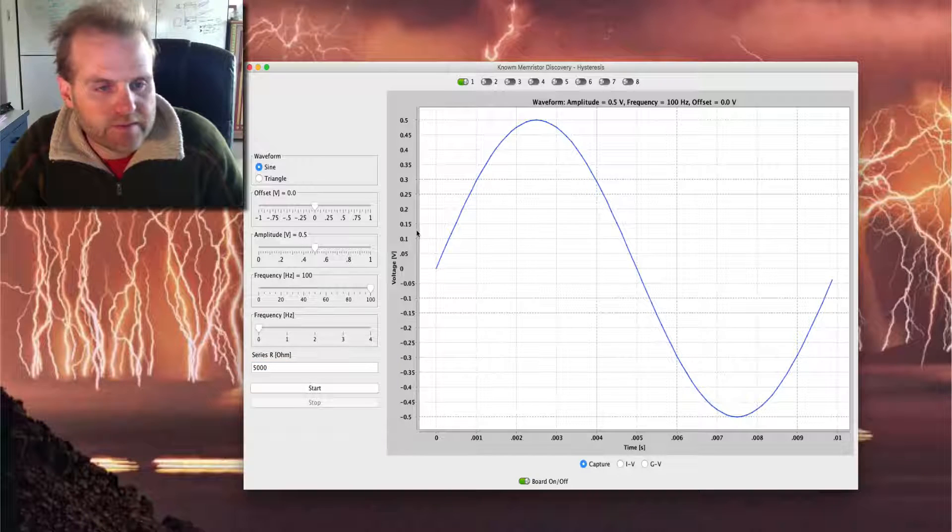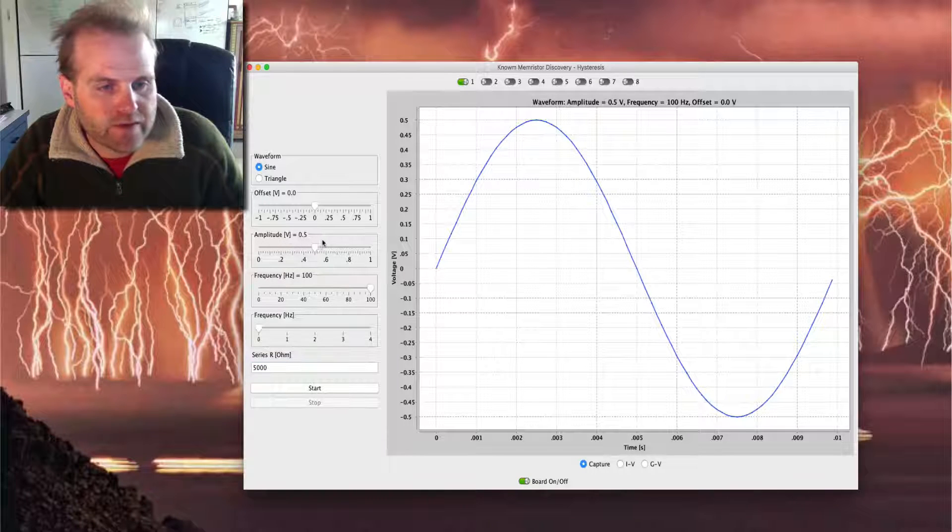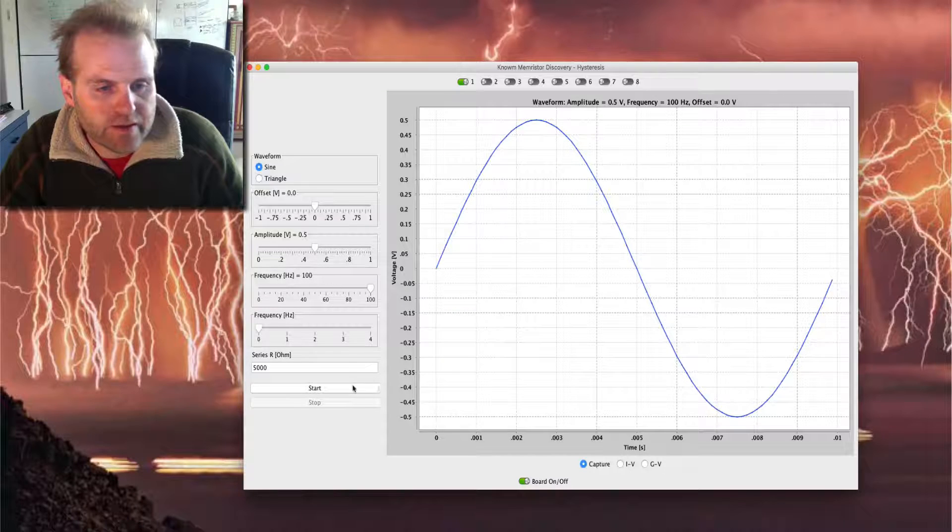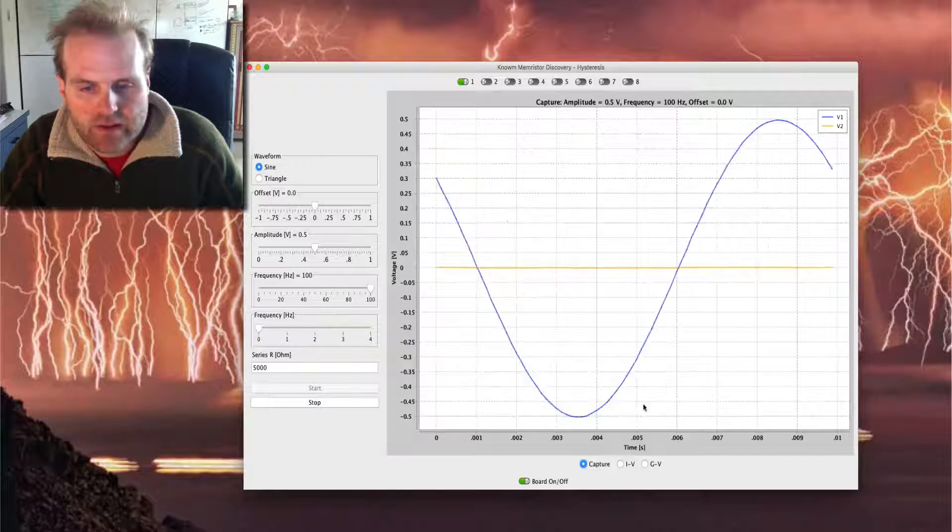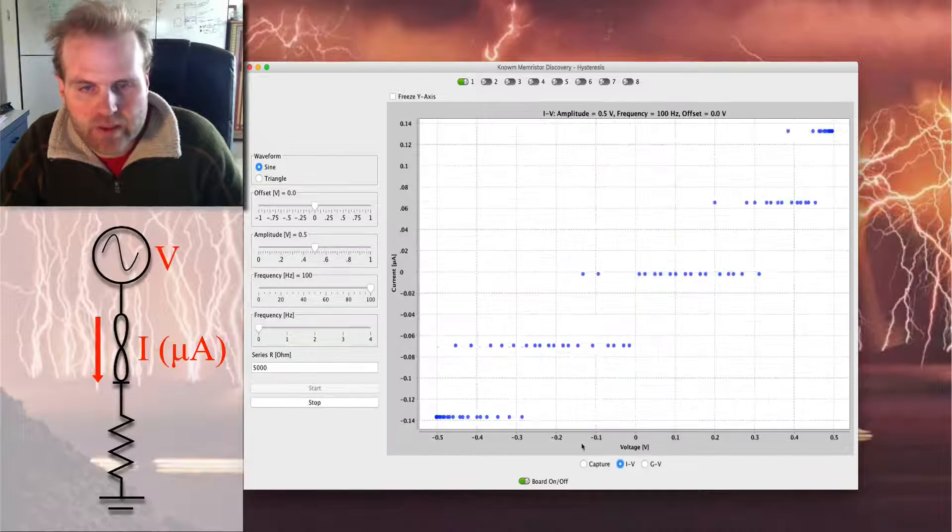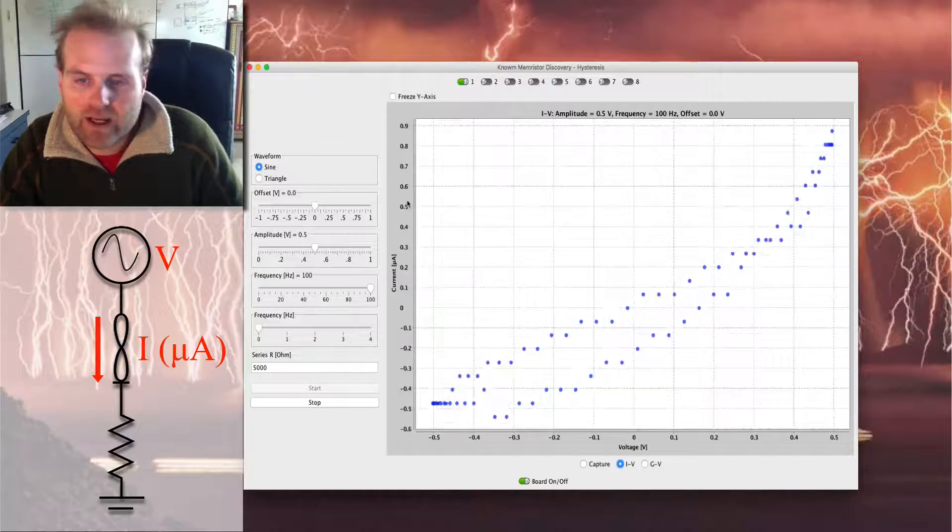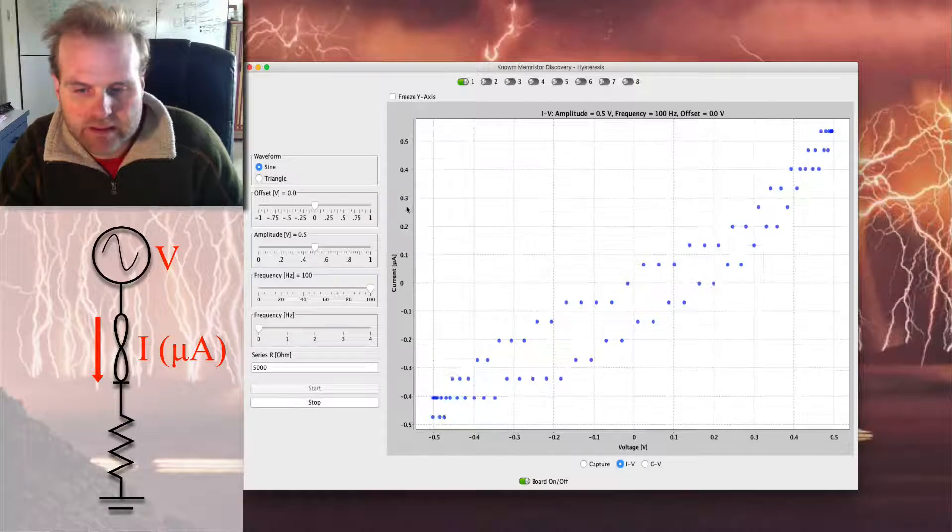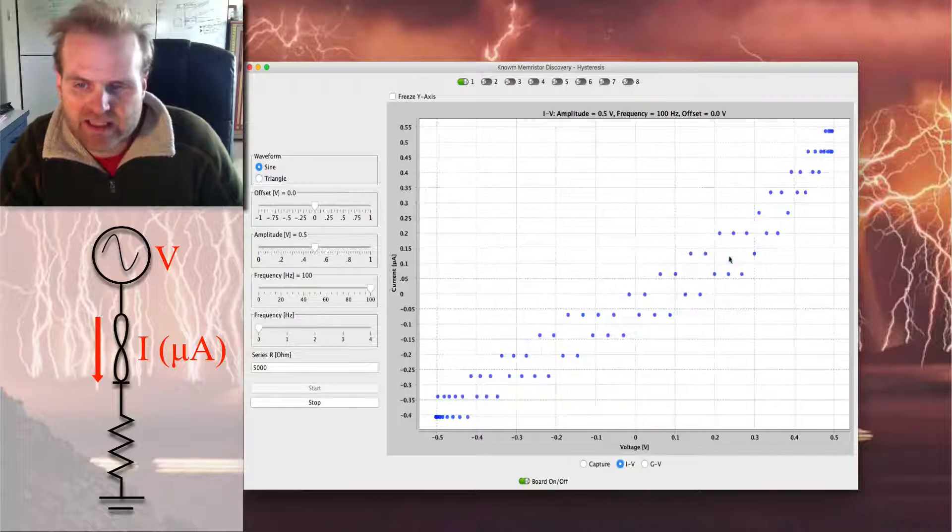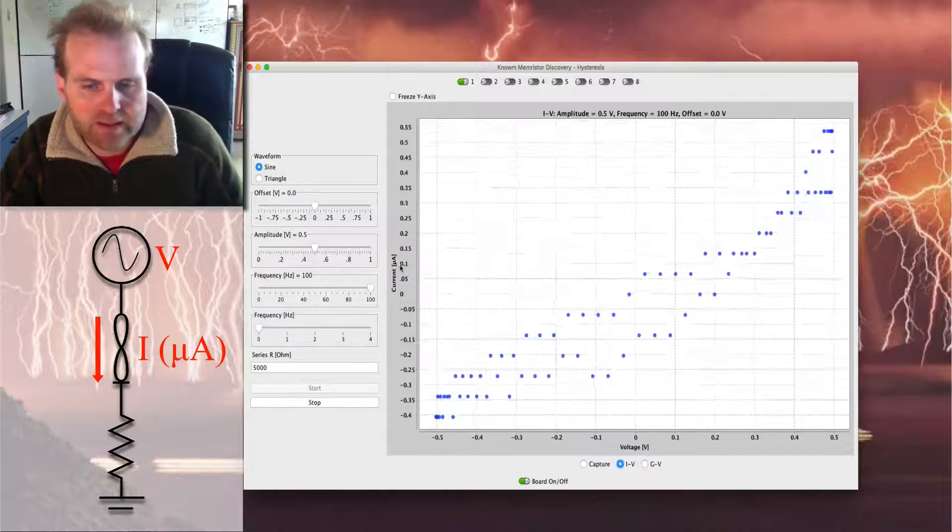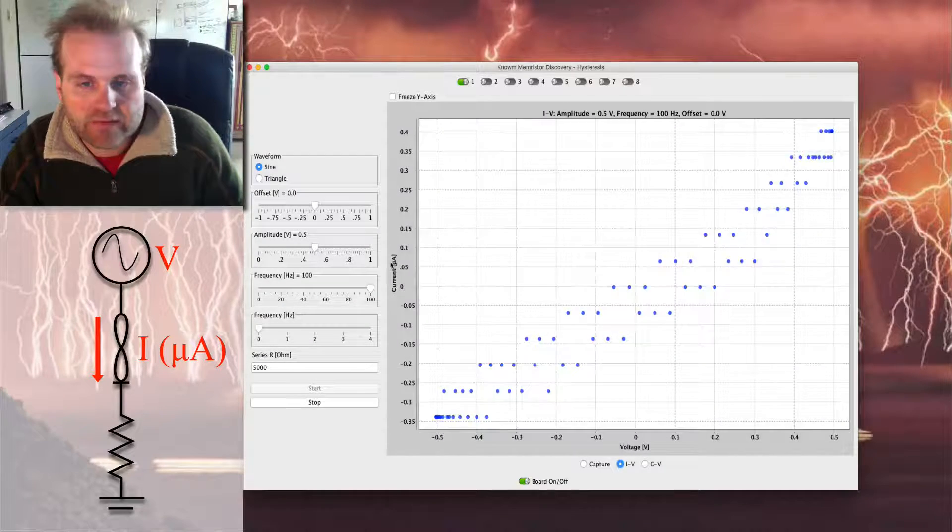Let's select the first device. We have our starting amplitude 0.5 volts. Frequency is set at 100 Hz. Let's take a look at the IV plot. So what we can see, the current here is down below one microamp. This indicates a device that has not yet been formed. You see a little bit of hysteresis, but really not much. Nothing good here yet. So we've got to form this device.